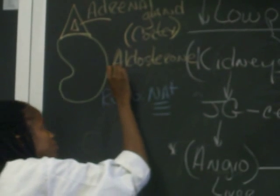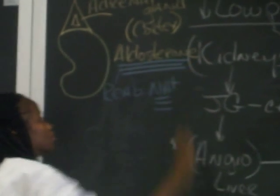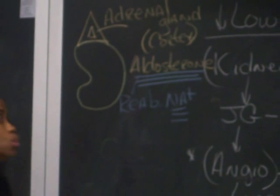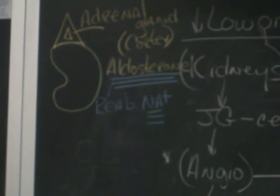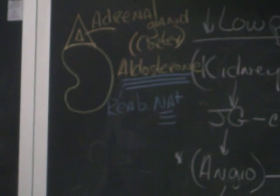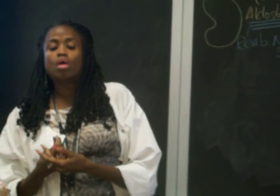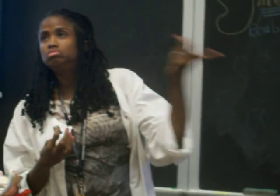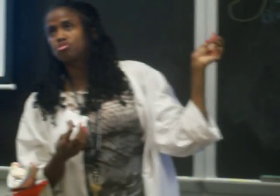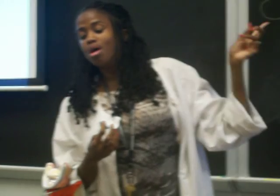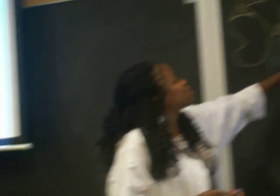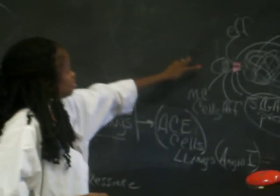And aldosterone will affect what area specifically we talked about this in class. What area was this target? What area along the nephron unit was that target? Where? Tubules? Which one? Aldosterone. I got two tubes. What are they called? Proximal and distal. Which one does this affect? Proximal. Aldosterone. Aldosterone affects which one? Distal. Distal.